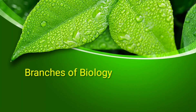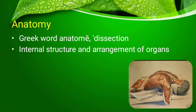Today we will be discussing branches of biology. The first branch is anatomy. Anatomy is derived from two Greek words: 'anatome' which means dissection, and 'logia' which means study or knowledge. Anatomy is the study of internal structure and arrangement of organs. To study the internal structure, we have to dissect it with a razor blade or cutting edge and observe it.